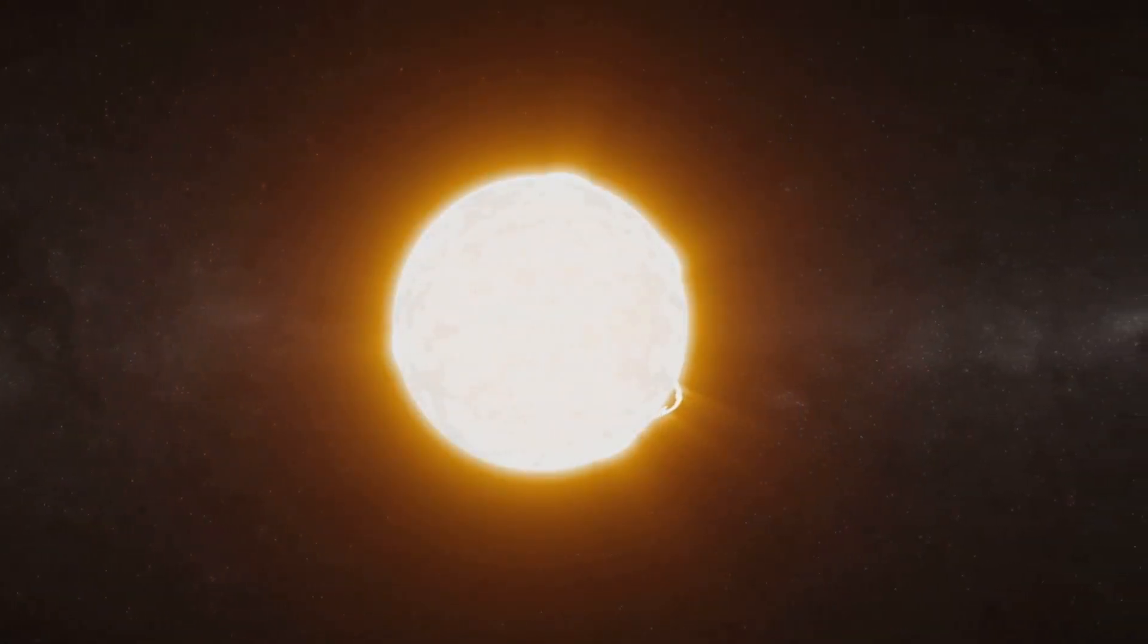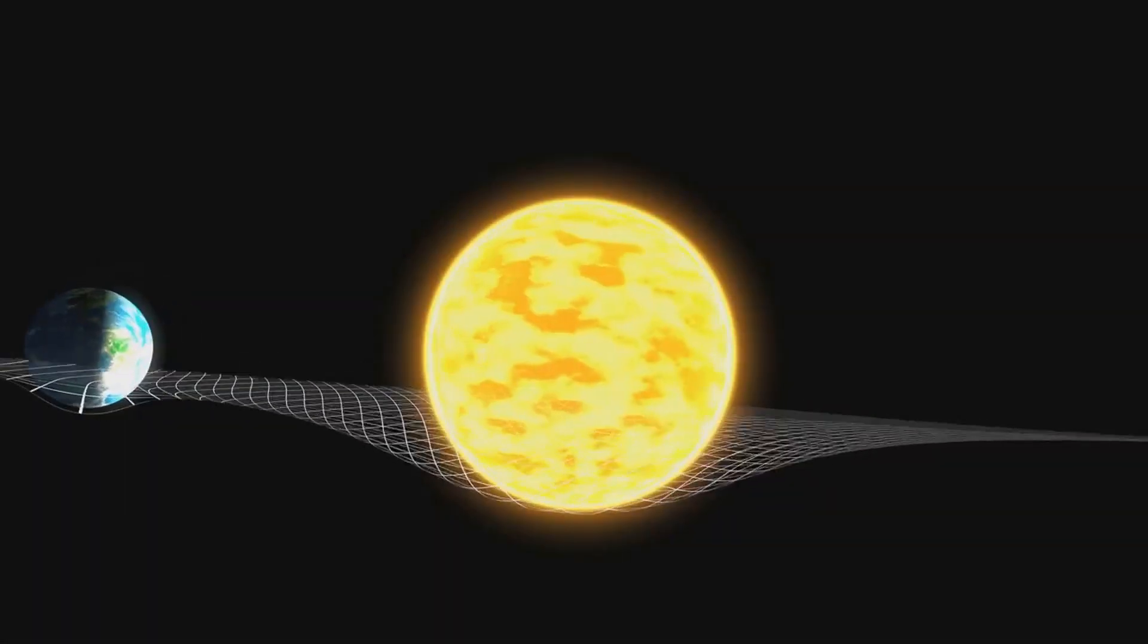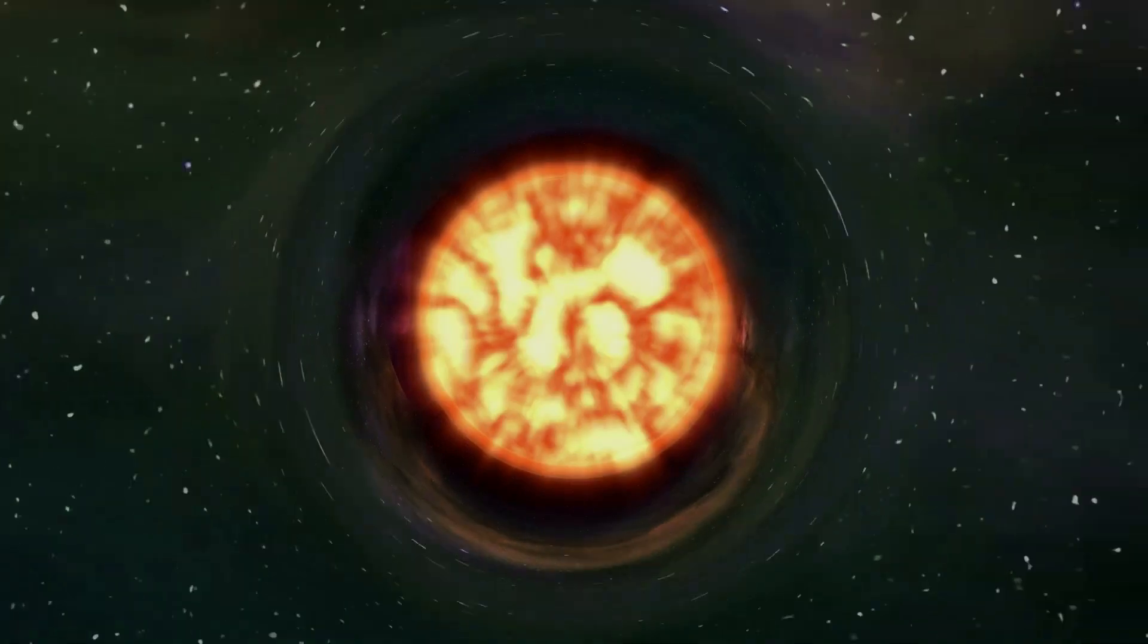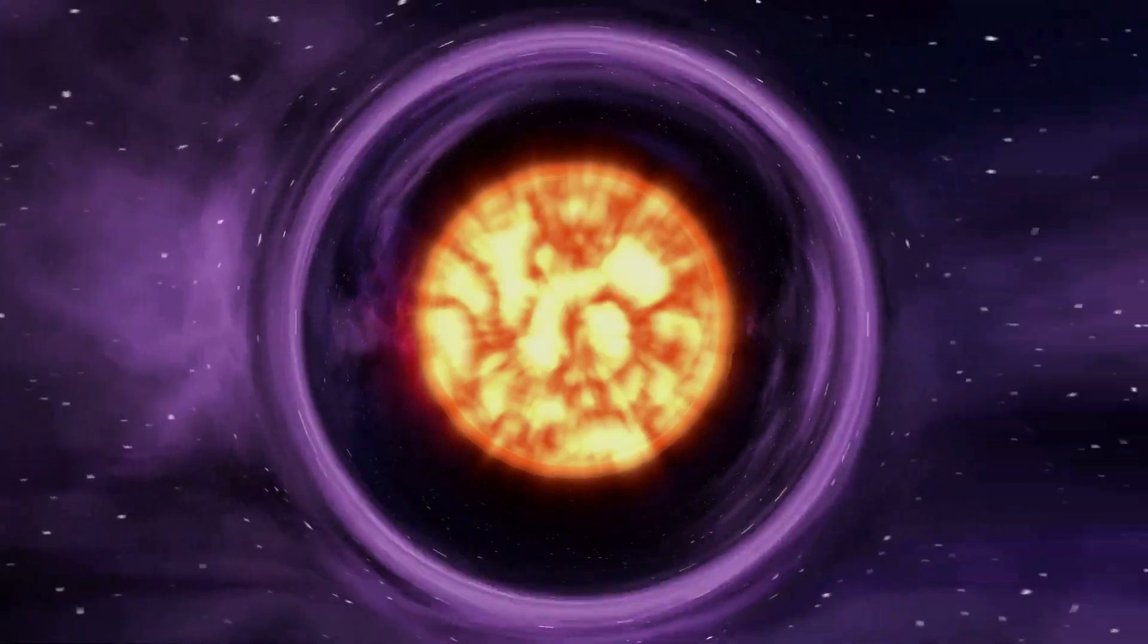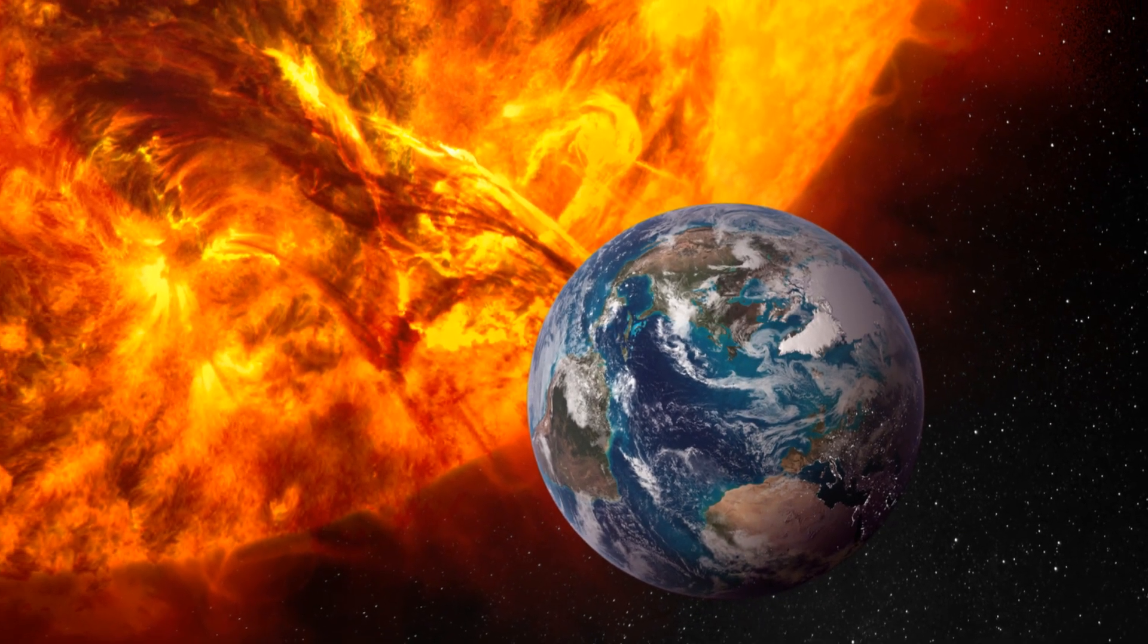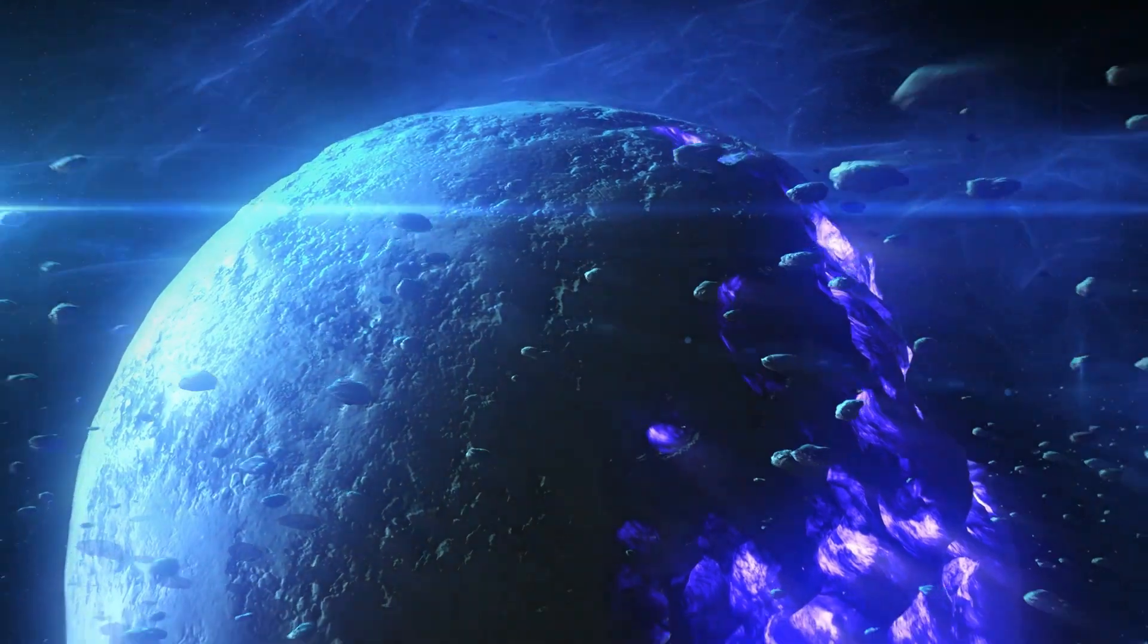But the Sun's growing influence doesn't stop there. As its energy output increases, it will also undergo significant mass loss. This loss of mass will weaken its gravitational pull on the inner planets, potentially altering their orbits. These gravitational interactions could lead to unpredictable interactions between planets, potentially ejecting some from the solar system altogether.